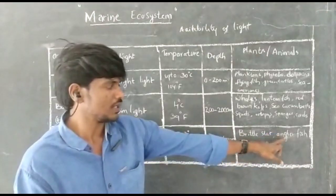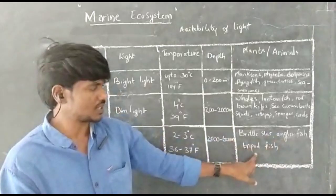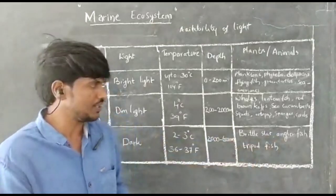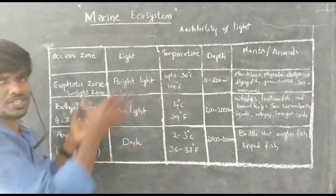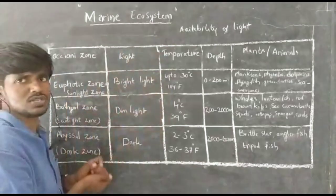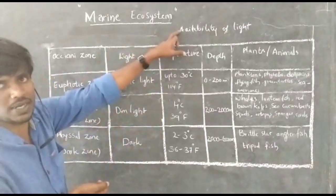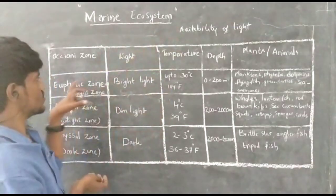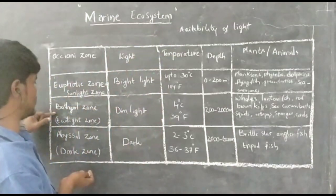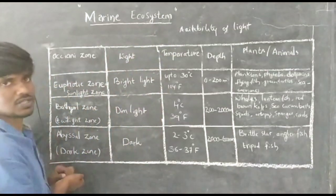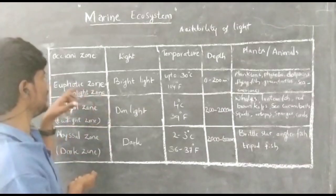Brittle stars, anglerfish, and tripod fishes are the main animal species in the abyssal zone. So these are the three zones in the marine ecosystem based on light availability: the first zone is the euphotic zone, the second zone is the bathyal zone, and the third zone is the abyssal zone.